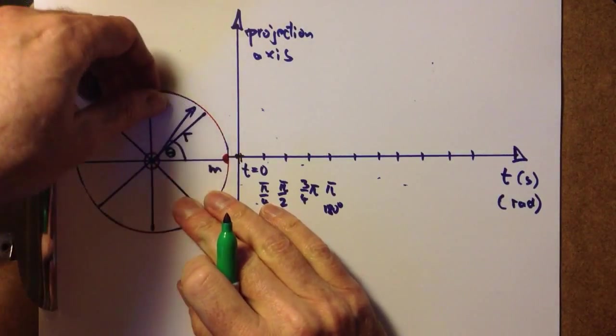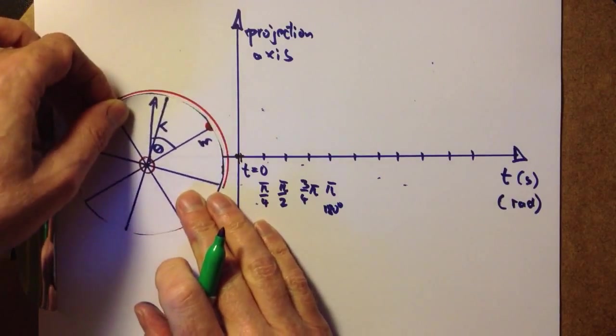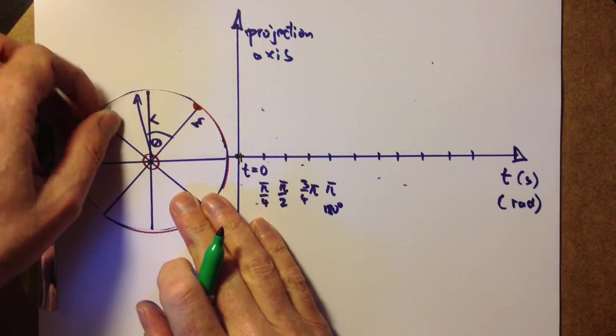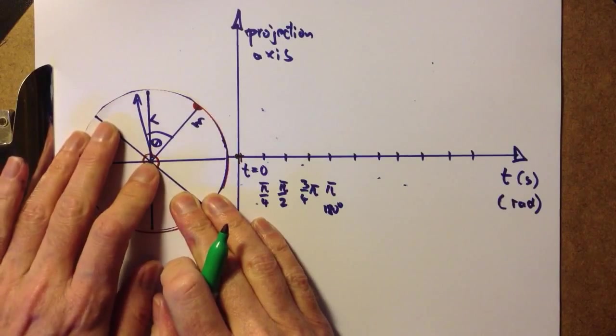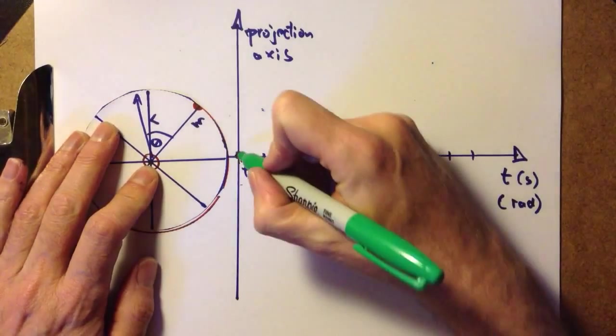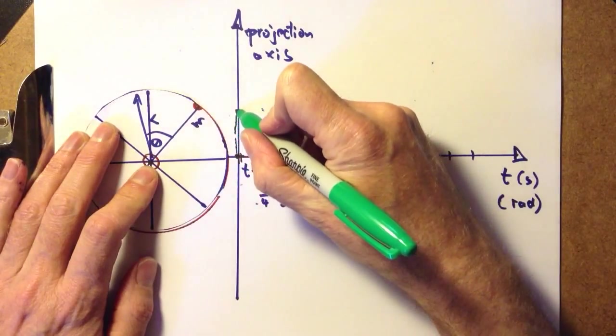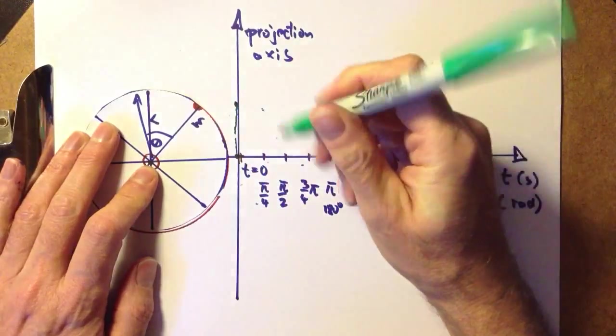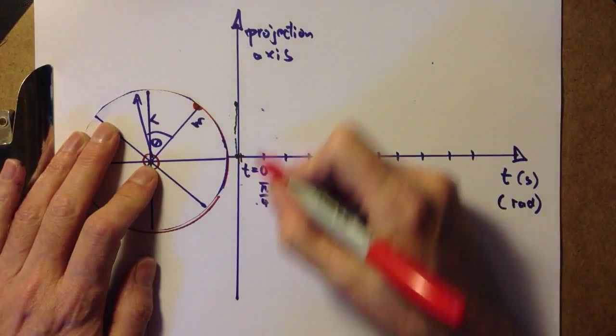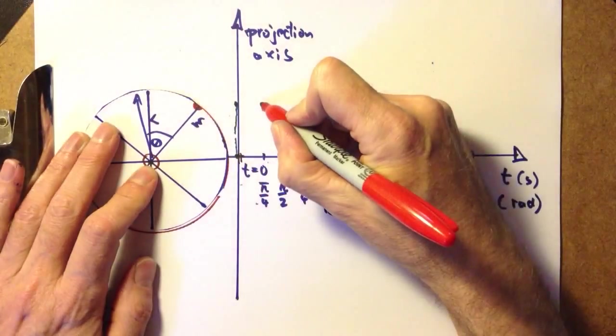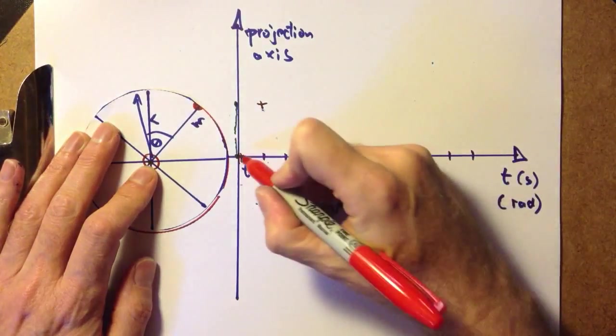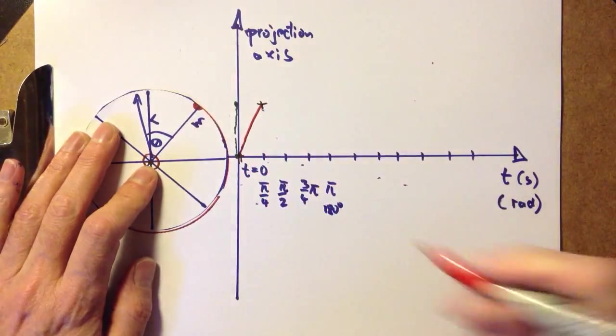Now we move on anticlockwise, with constant angular momentum, to 45 degrees, π/4. And we've moved up the projection scale up to this point. And on the time, in reference to the timescale, we're now at this position. So we have moved here.